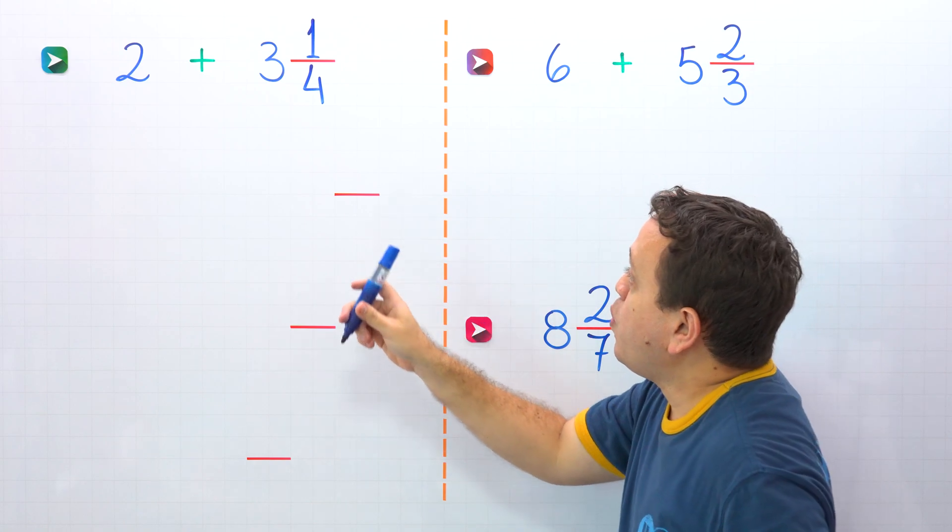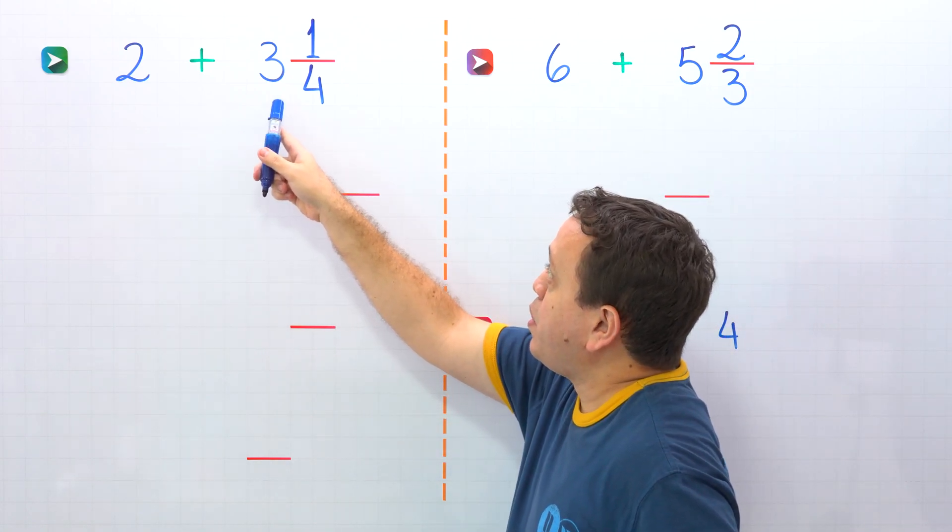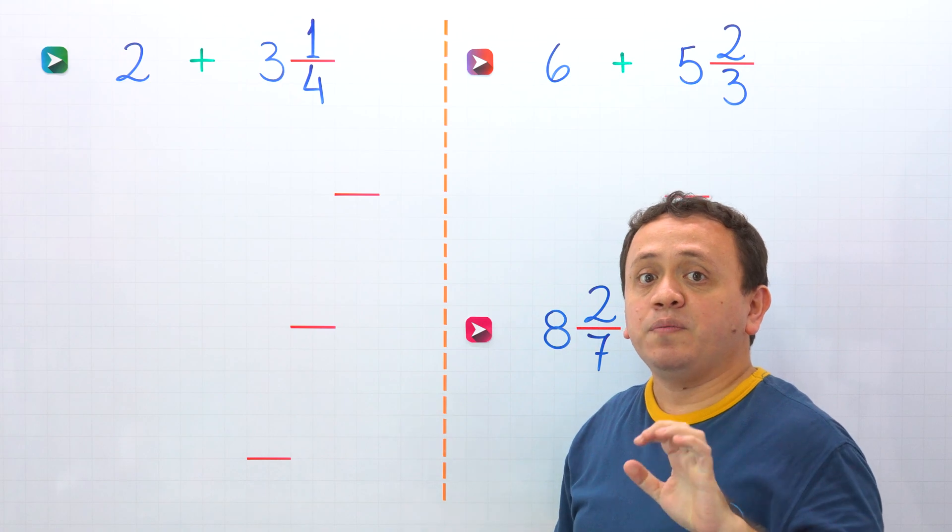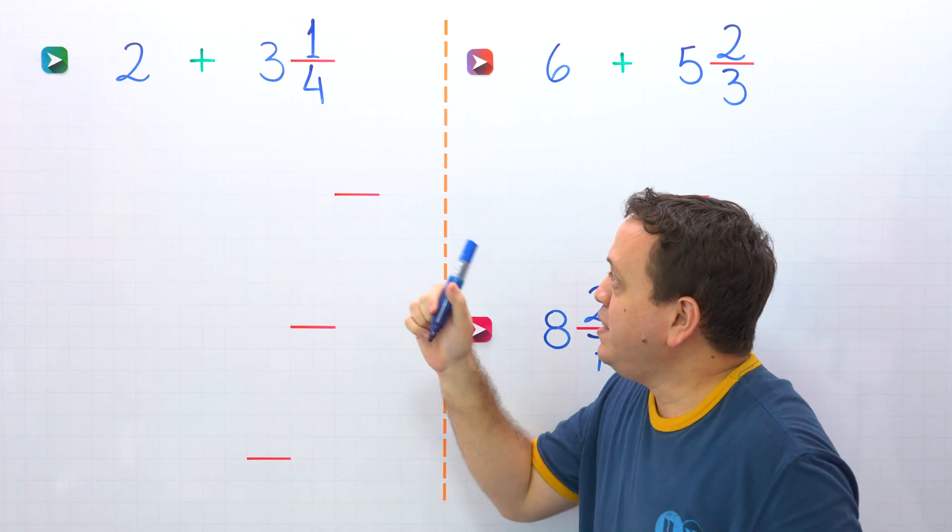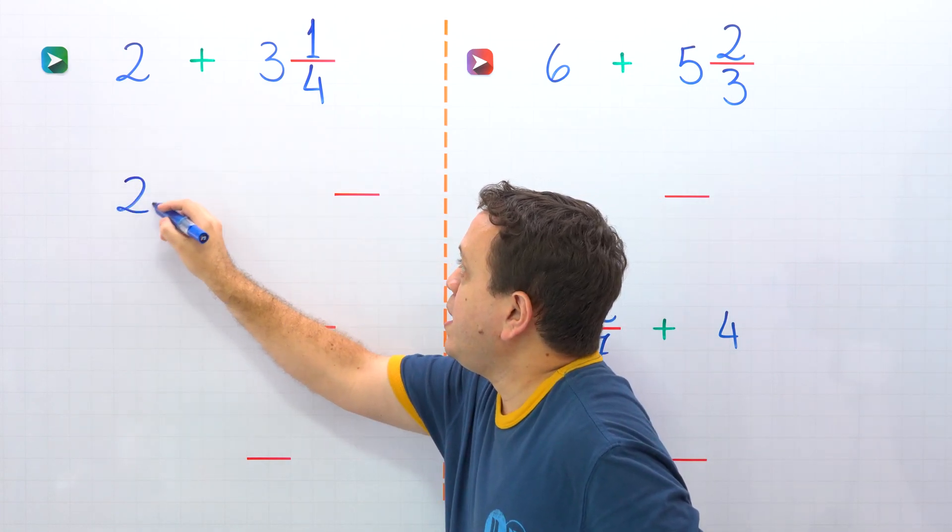In the first example, we're going to add 2 plus 3 and 1 fourth, and there are two different ways of solving this kind of problem. Let's just start with the slow method. In this method, first, we put the whole number one more time, so 2 plus...